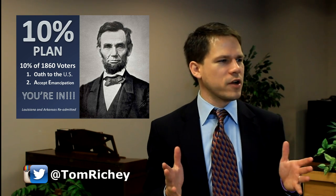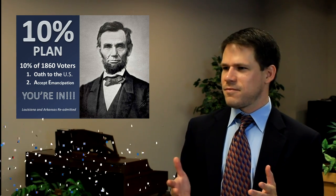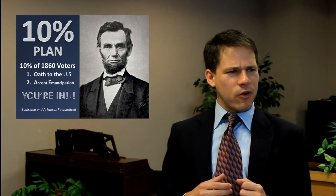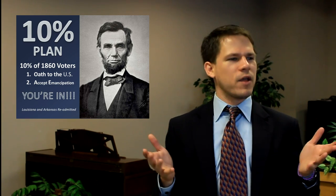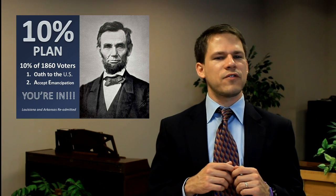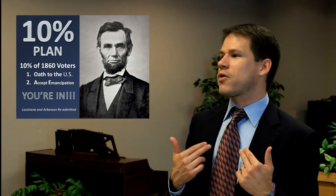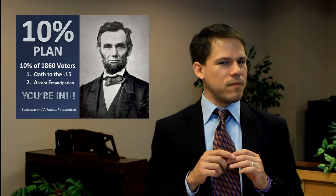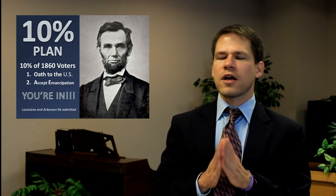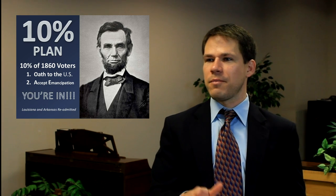I call this 'discount reconstruction.' All that had to happen is that 10% of the people who voted in the 1860 election had to swear an oath to the United States — a future oath saying, 'I may have been part of the Confederacy, but from here on out we're good.' Abraham Lincoln says 10% of people swear an oath to the United States, you accept emancipation, you draft a new constitution that emancipates slaves, and you're back in. It was that easy — Lincoln's plan was very generous to the South.